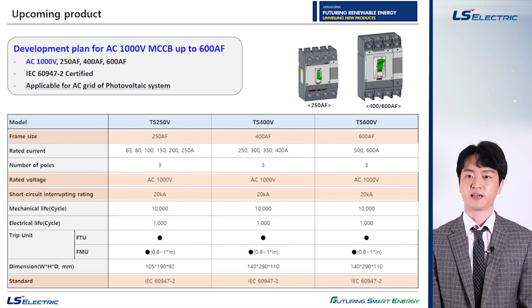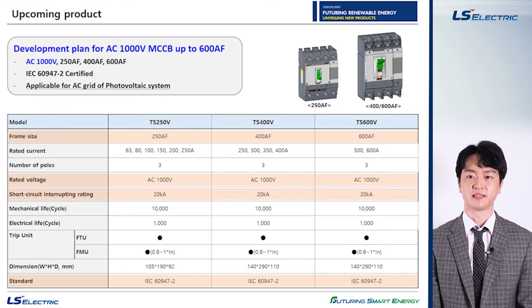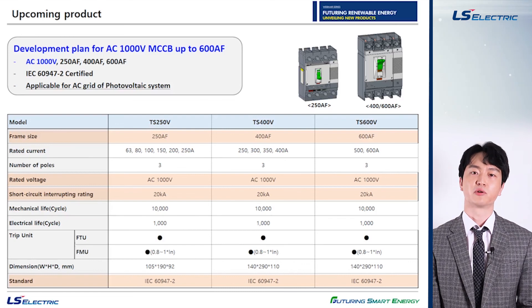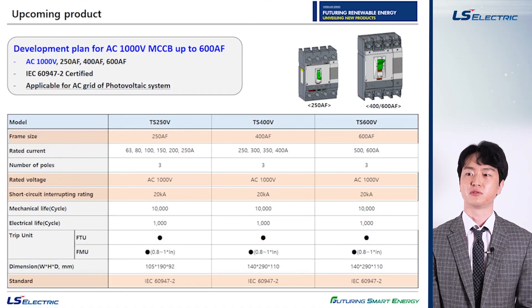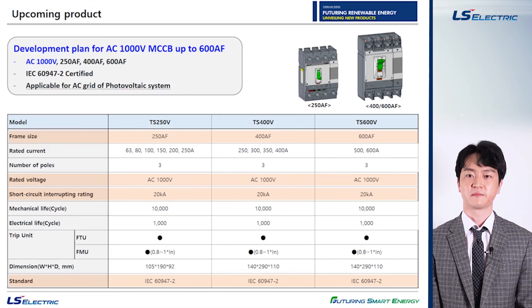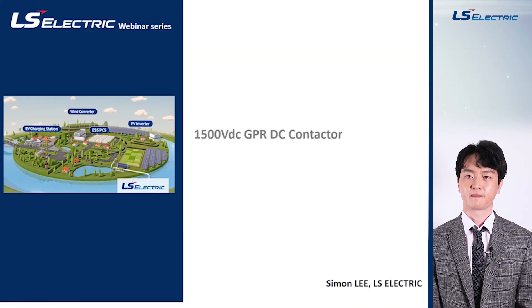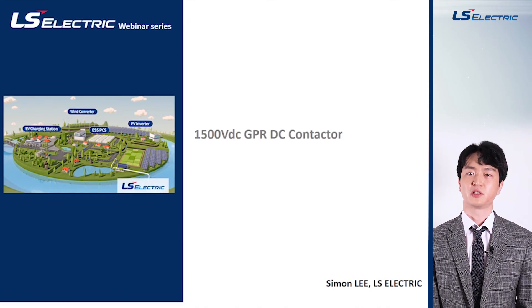It will be an IEC certified AC MCCB with a 20 kilo amps short circuit breaking capability. We believe this solution is already in high demand by our renewable energy customers and truly hope we will be able to launch this product soon. This concludes my presentation for the 1500 DC volts UL MCCB. Next is the DC contactor, which is applicable for up to 1500 DC volts systems.